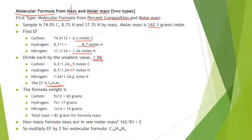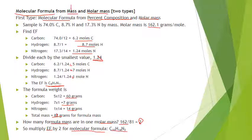The next step is to find the formula weight: 5×12 = 60 grams carbon, 7×1 = 7 grams hydrogen, 1×14 = 14 grams nitrogen — total formula mass is 81 grams. How many formula masses fit into the molar mass of 162? Divide 162 by 81 to get 2. There are two formula masses per molar mass, meaning two empirical formulas per molecular formula. Multiply every subscript by 2 to get the molecular formula C10H14N2.